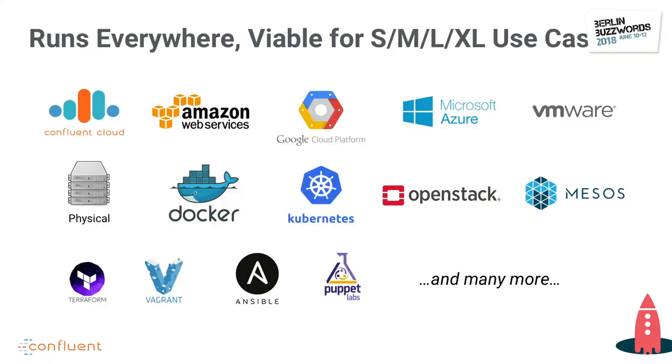KSQL, just like Kafka Streams, runs everywhere. Wherever you can deploy a JVM process, you can deploy this — it's equally viable for a small proof-of-concept or prototype as for a very large-scale production setup. That's pretty cool, because with other big data tools like Hadoop or Spark, you have to reach a minimal threshold of pain before you take the jump. Here, you can use the same tool from initial local testing all the way to large-scale production on dozens of machines.